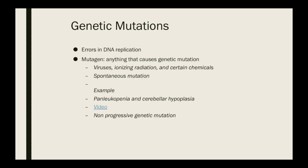Genetic mutations are errors in DNA replication. A mutagen is anything that causes a genetic mutation from outside the body or having a factor on the body — not intrinsically from the DNA itself. Viruses, ionizing radiation, and certain chemicals can cause genetic mutations, and there is spontaneous mutation as well. An example of a mutagen is panleukopenia causing cerebellar hypoplasia.